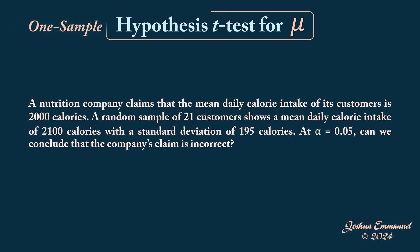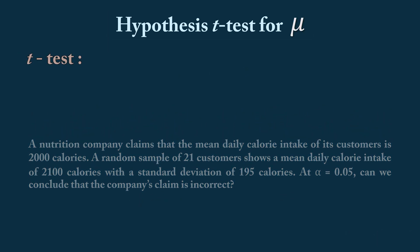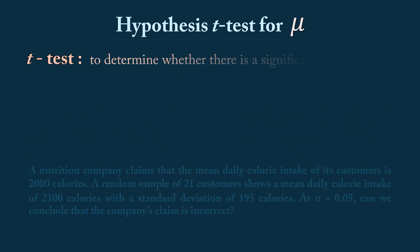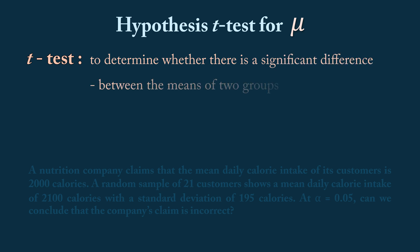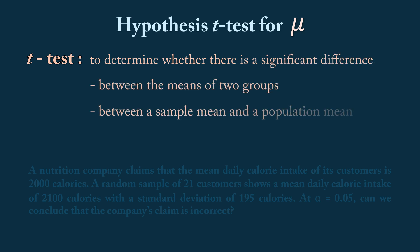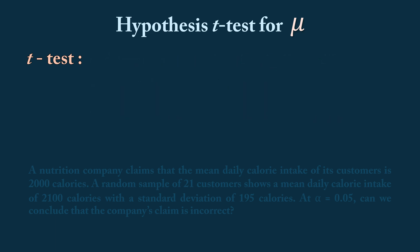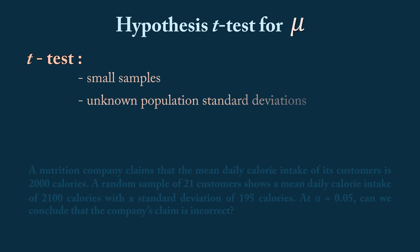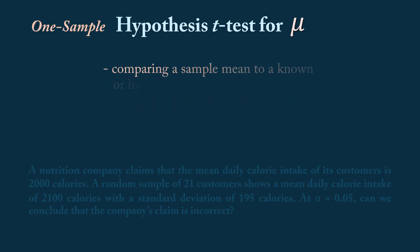Welcome to this one-sample hypothesis t-test video. We'll be conducting a two-tail test and corroborating our results using confidence intervals. A t-test is a statistical tool used to determine whether there is a significant difference between the means of two groups or between a sample mean and a known hypothesized population mean. It's mainly used when working with small samples or when population standard deviations or variances are unknown. We'll be conducting a one-sample t-test, which is used to compare a sample mean to a known or hypothesized population mean, helping to determine if the sample is likely to have come from a population with that hypothesized mean.